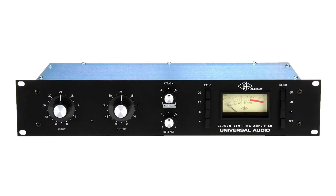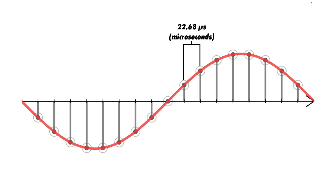The 1176, for example, is capable of extremely short attack times, down to about 20 microseconds. This poses a serious obstacle for making a plug-in emulation of the 1176, because 20 microseconds is even shorter than the sample length at a 44.1 kHz sample rate. Therefore, it's a bit difficult to detect the amplitude of the signal and control the gain within that extremely short period of time.